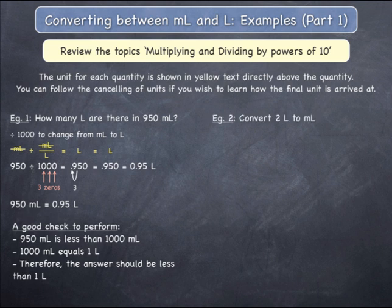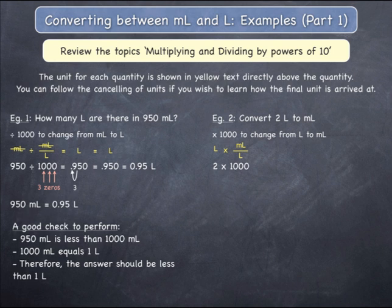Example 2. Convert 2 litres to milliliters. Since you are changing from litres to milliliters, you must multiply the starting quantity by 1000. 2 litres multiplied by 1000 milliliters per litre can be found by writing the starting number of 2, and since 1000 has three zeros and 2 has no visible decimal point, you can add three zeros onto the end of the starting number, giving 2000.